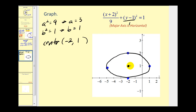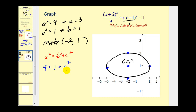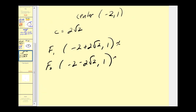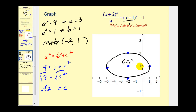The foci lie on the major axis, so we need to find c and add and subtract it to the x coordinate of the center. For an ellipse, a squared equals b squared plus c squared. We know a squared is nine and b squared is one, so c squared equals eight, meaning c equals the square root of eight, or two square root of two. Converting to decimal, the two foci are approximately (−0.83, 1) and (−4.83, 1).